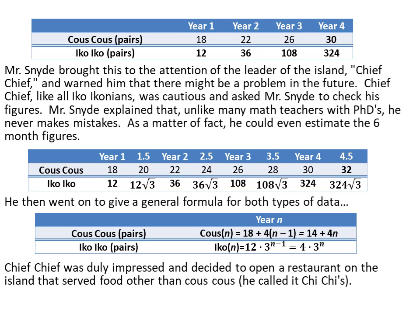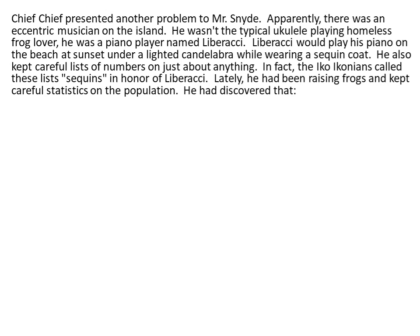Chief Chief was duly impressed and decided to open a restaurant on the island that served food other than couscous. He called it Chi-Chi's. Chief Chief presented another problem to Mr. Snide. Apparently there was an eccentric musician on the island — he wasn't the typical ukulele-playing homeless frog lover; he was a piano player named Liberace. Liberace would play his piano on the beach at sunset under a lighted candelabra while wearing a sequin coat. He was also keeping careful lists of numbers on just about anything. In fact, the Ico Iconians called this list 'sequins' in honor of Liberace. Lately he had been raising frogs and kept careful statistics on the population.